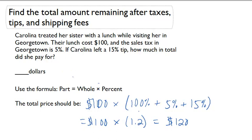So if she has a sales tax of 5% and is planning to leave a 15% tip, her total meal will cost $120.